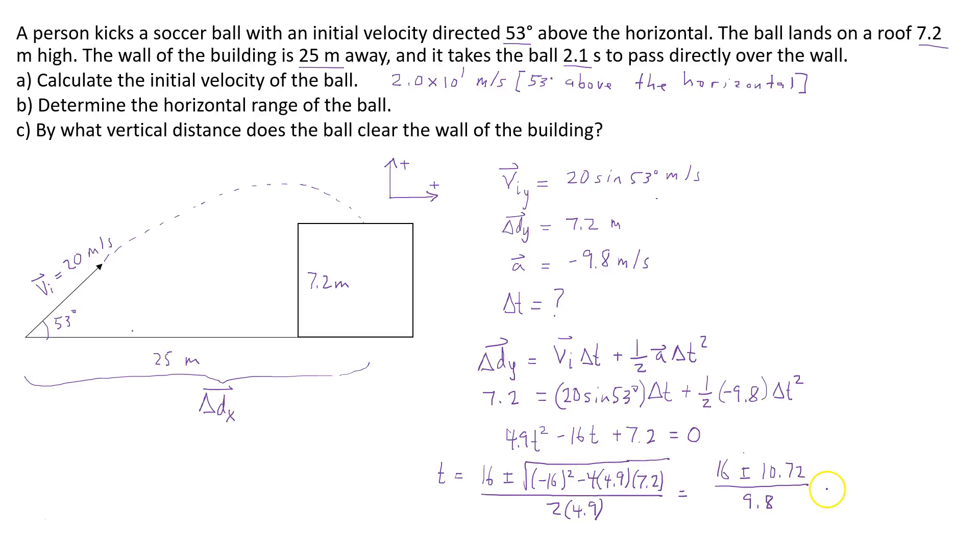So that gives us 16 plus or minus 10.72 divided by 9.8. And so we get two values. So t1 is going to be 2.73 seconds, and t2 is going to be 0.54 seconds.